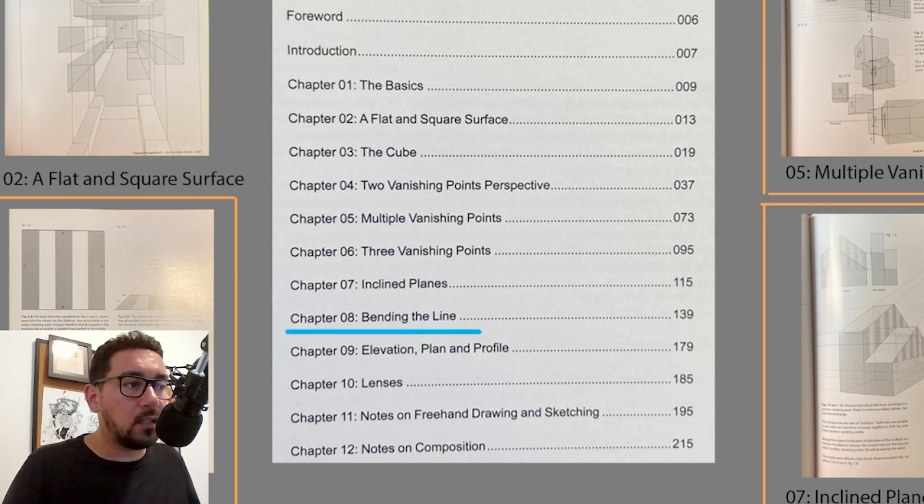Inclined planes that they will converge as well, but to an auxiliary vanishing point above the horizon line, even if you are looking straight to the horizon line parallel to the ground. So we're gonna see some examples as well. Bending the line, finally, on chapter eight, he gets to ellipses. So it's great to see that he took his time to get there.